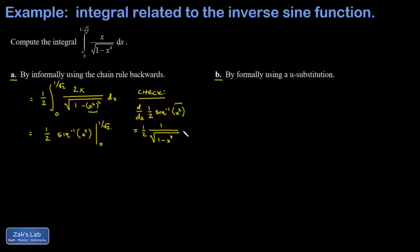The chain rule says now you've got to tack on the derivative of that argument with respect to x. That's a 2x. The 2s cancel, and I'm back to where I started. So I've got the right antiderivative here.